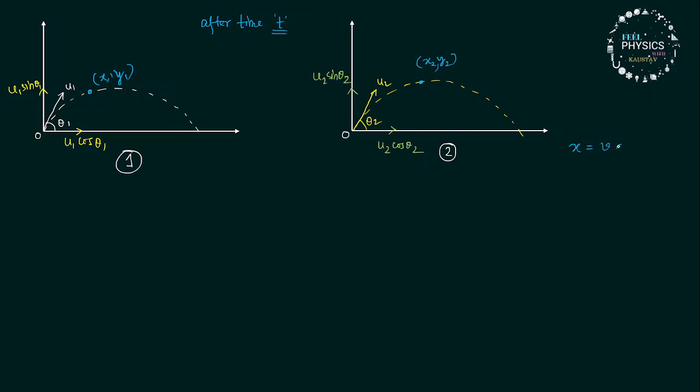x equals velocity into time, because in the horizontal direction there is no acceleration. But in the vertical direction there is gravitational acceleration, acting like deceleration. So, we will apply this equation: y equals ut minus half gt squared.